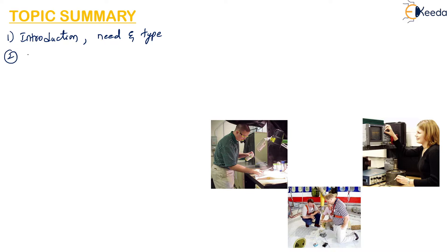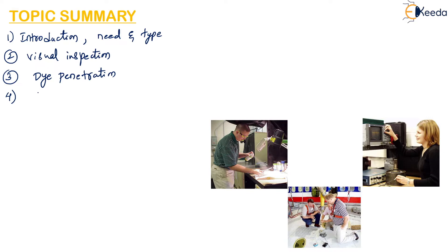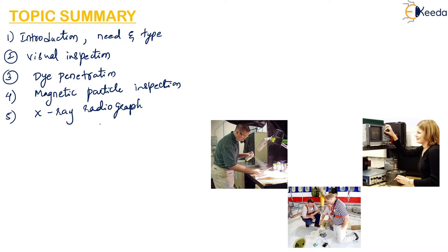Among the types, the first one is visual inspection, then we have dye penetration or liquid penetration test, then magnetic particle inspection, then x-ray radiography, then ultrasonic testing, and the last one is the eddy current method.